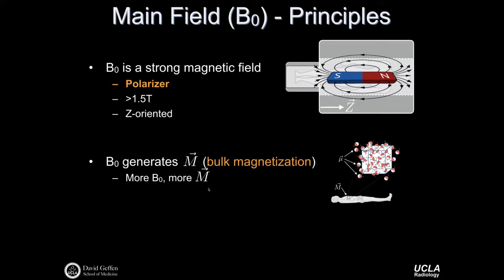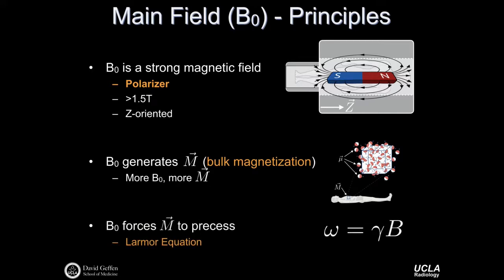The more available magnetization, the stronger the signals for forming higher quality images. B0 forces the bulk magnetization to precess according to the Larmor equation. If we know the strength and direction of the externally applied magnetic field and the gyromagnetic ratio of the species of interest—in our case typically hydrogen—we know the Larmor frequency at which the spin system will precess. This is critical because many things rely on knowing the Larmor frequency for both exciting the spins and forming images.